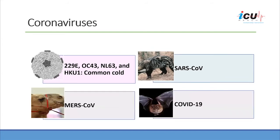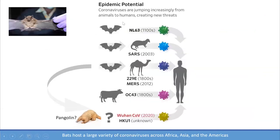The virus we are dealing with right now is another coronavirus that also jumped from animals to humans. This event occurred sometime in December at the wet market in China. We think it came through an intermediate host from the bat, which is the natural reservoir for coronaviruses. In the case of SARS 2003, the intermediate host was the civet cat. In the case of MERS, it was the camel. And now we think it is through the pangolin, but that has not yet been identified conclusively.